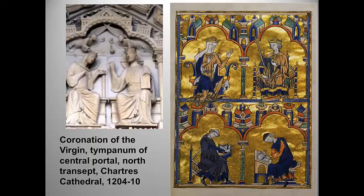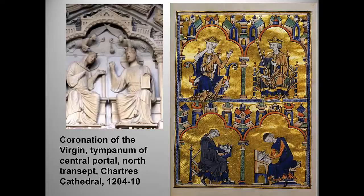The Chartres tympanum dates from just a few years before the manuscript page and was one of many images of the coronation of the Virgin by Christ appearing all around Gothic Europe. The adoration of Mary as Queen of Heaven coincided with the rule of some very strong queens. A few decades later, French Queen Eleanor of Aquitaine would accompany her husband on a crusade — before she divorced him, married the King of England, became Queen of England, and the mother of King Richard the Lionhearted.